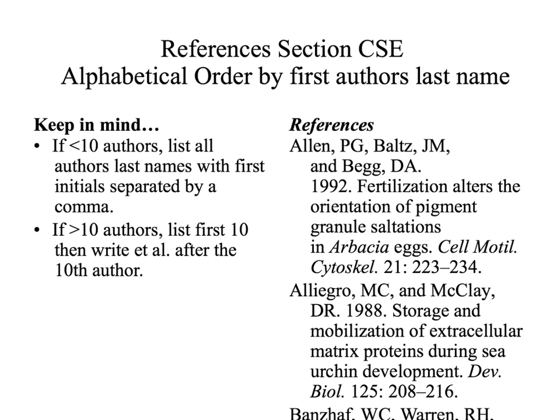Let's now talk about how you can create your own list of references in CSE format. You want to ensure that each article citation is included in your paper as an in-text citation for it to appear in the end references. You want to list the sources that you used in your paper in alphabetical order by the first author's last name. If there are less than ten authors listed on the paper, all authors should be included, but if there are more than ten authors, you can abbreviate it with et al.